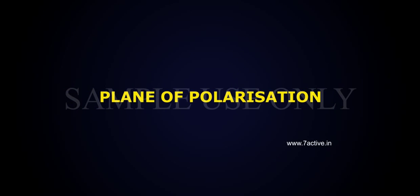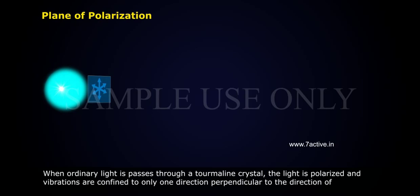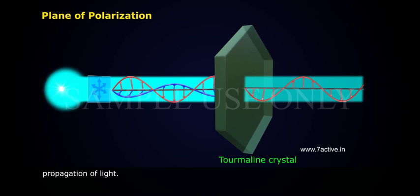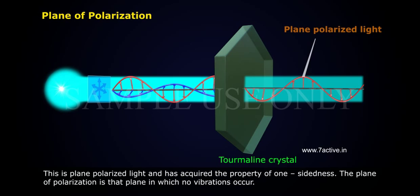Plane of polarization. When ordinary light passes through a tourmaline crystal, the light is polarized and vibrations are confined to only one direction, perpendicular to the direction of propagation of light. This is plane polarized light and has acquired the property of one-sidedness.